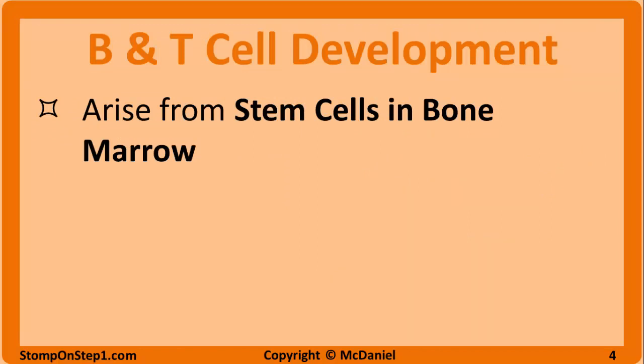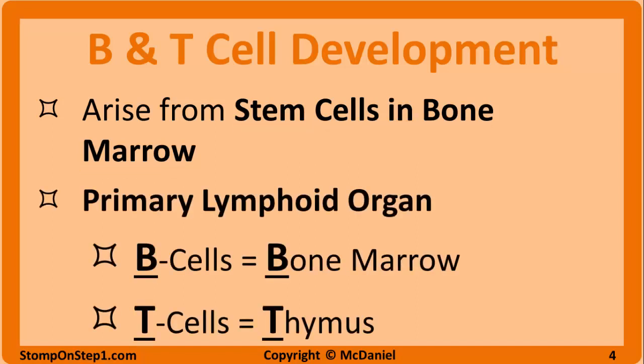Now we'll talk about B and T cell development. Both T cells and B cells begin life in the bone marrow and arise from multipotent hematopoietic stem cells. Immature B cells remain in the bone marrow to complete maturation — you can think B for bone marrow and B cell. Immature T cells leave the bone marrow and travel to the thymus to complete maturation — T cell, thymus, both T's. The bone marrow and the thymus are referred to as primary lymphoid organs, where B cells and T cells differentiate and mature.